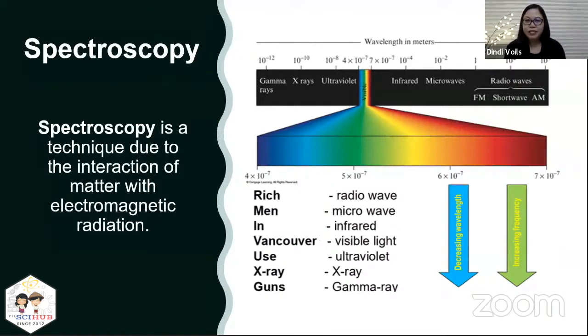So there are different types of EMR. You have radio wave, microwave, infrared, visible light, UV, X-ray, and gamma ray.